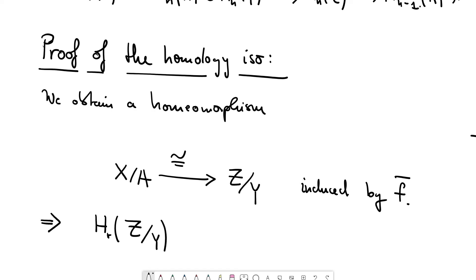I should have written it the other way around. So let's start with X comma A. In particular, the homology is isomorphic. It's a much stronger statement.